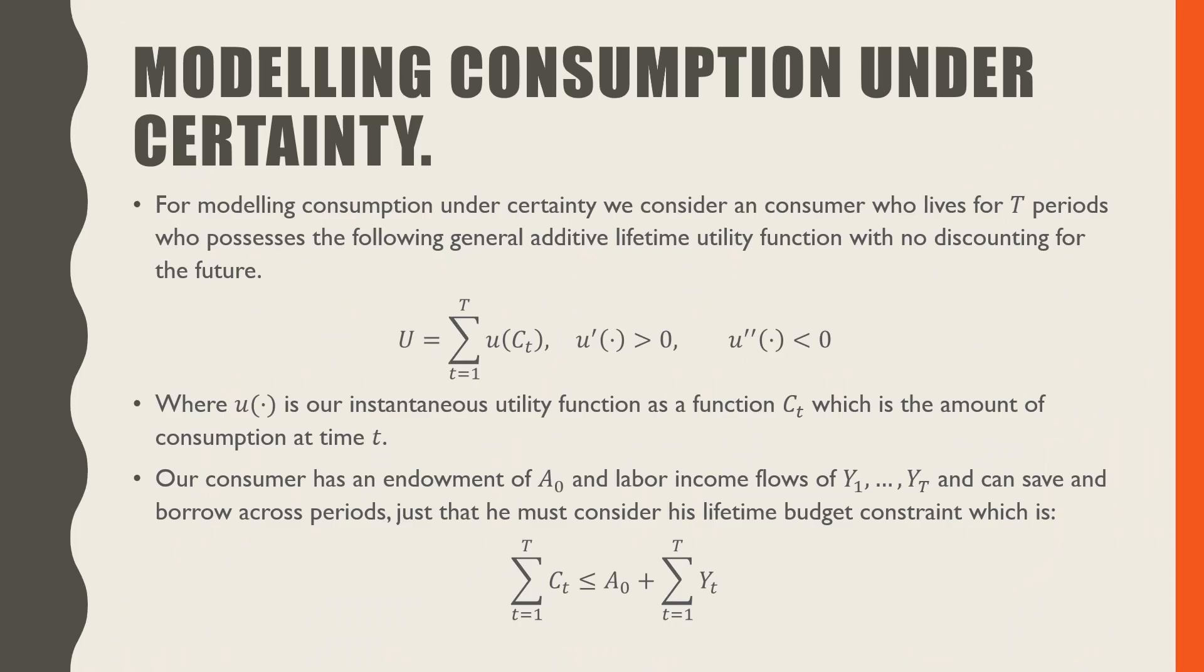For modeling consumption under certainty, we consider a consumer who lives for T periods and possesses the following additive lifetime utility function with no discounting for the future, where capital U equals the summation of all little u as a function of consumption at time t, where t goes from 1 to capital T, where this instantaneous utility function is concave with u'(·) > 0 and u''(·) < 0.